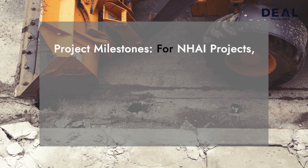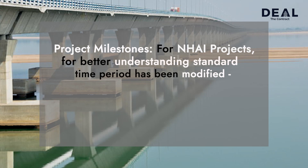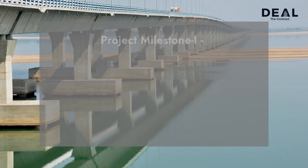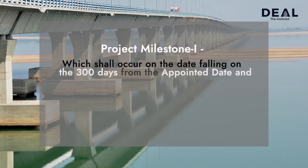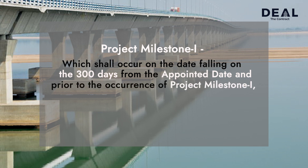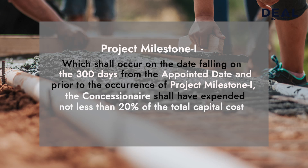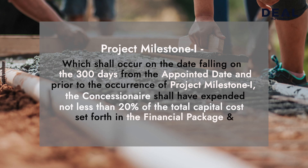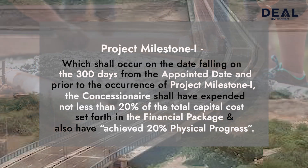Project milestones for NHI HAM projects — for better understanding, the standard time period has been modified. Project Milestone 1 shall occur on the date falling on the 300th day from the appointed date. Prior to the occurrence of Project Milestone 1, the concessionaire shall have expended not less than 20% of the total capital cost set forth in the financial package and also have achieved 20% of physical progress.